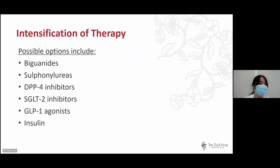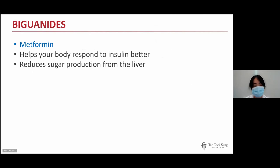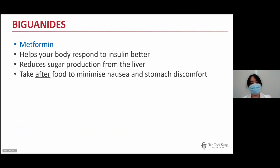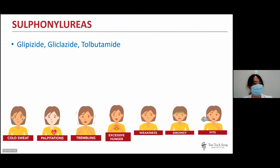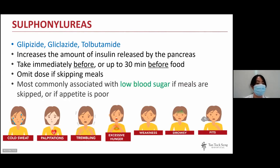There are many medication options for diabetes treatment, each working in different ways to help the body produce more insulin, use insulin more effectively, or providing insulin itself. The first is metformin — the most commonly used medication. It helps the body respond to insulin better and reduces sugar production from the liver. Because it can cause stomach discomfort and nausea, it is best taken after food.